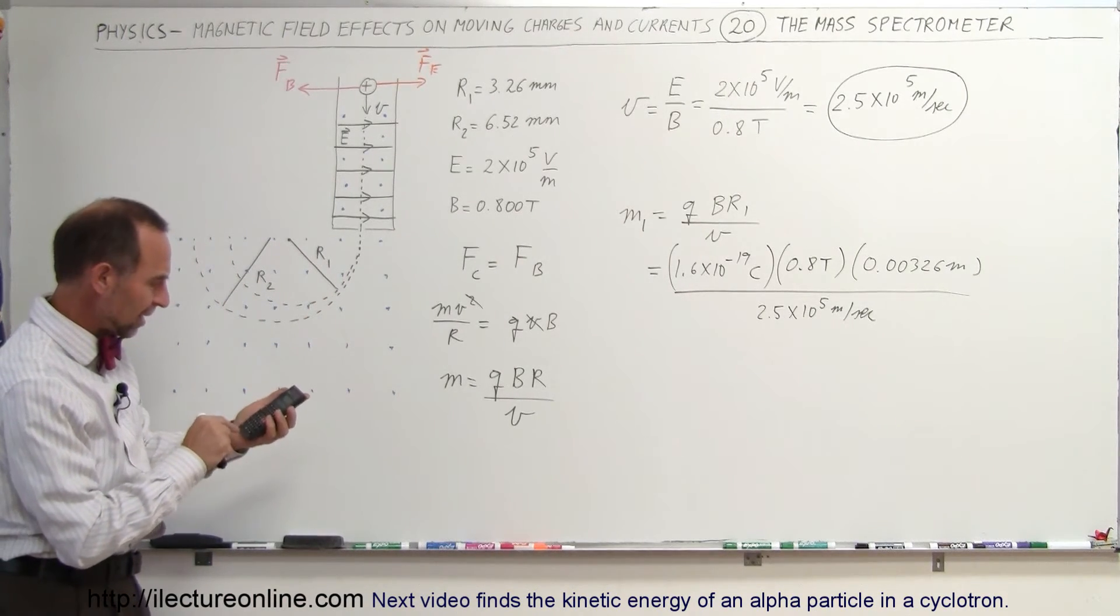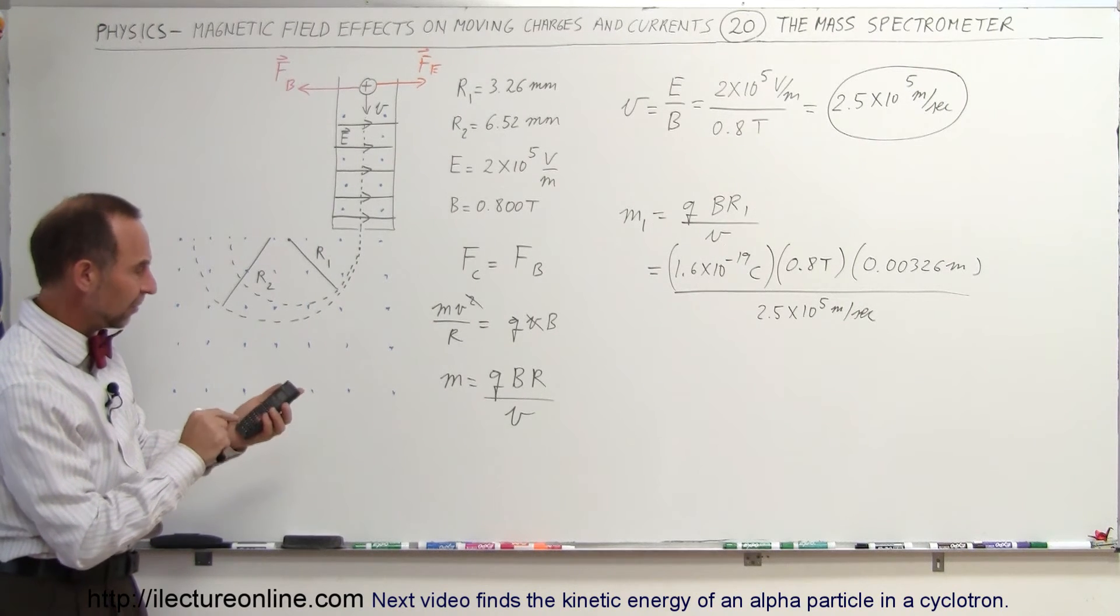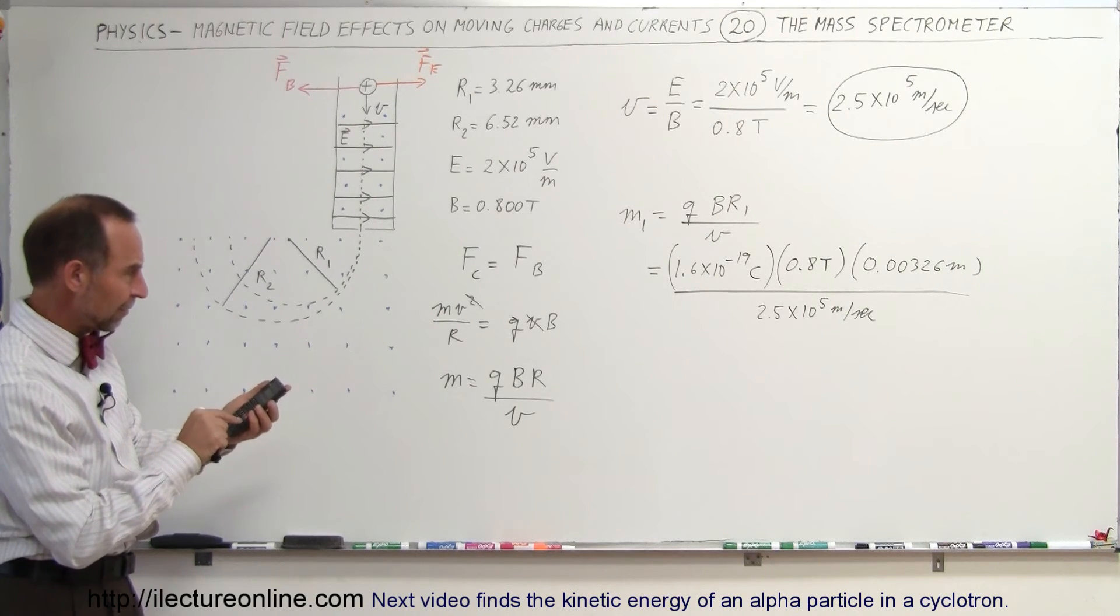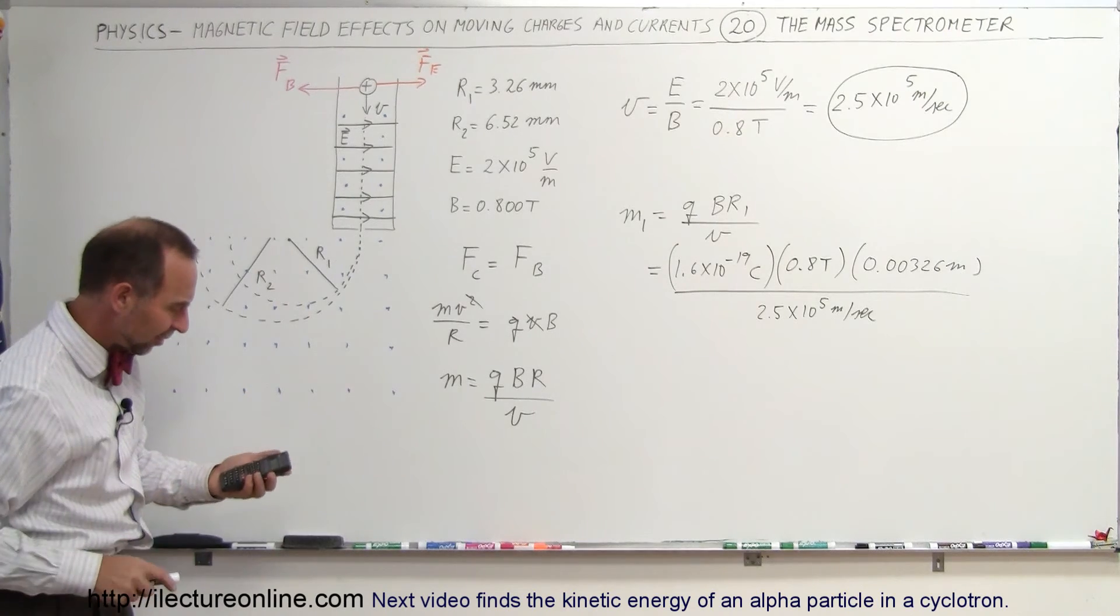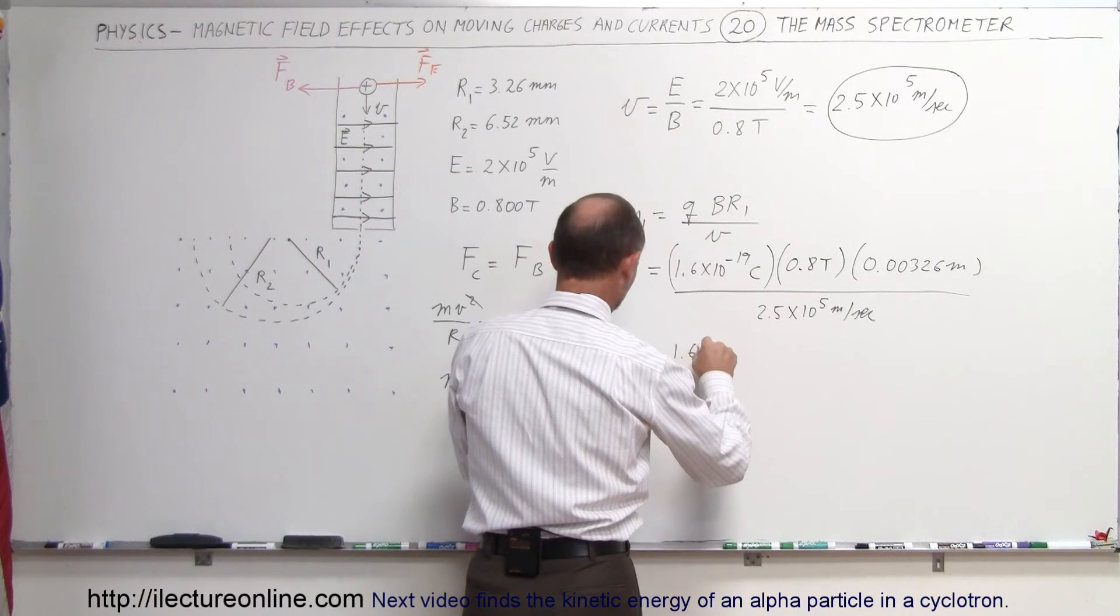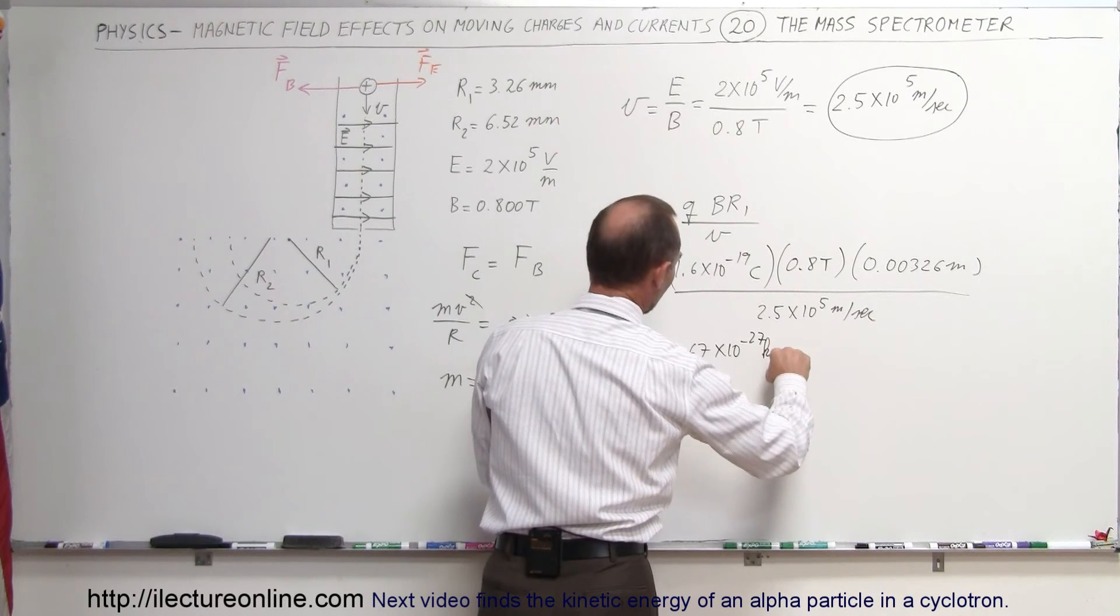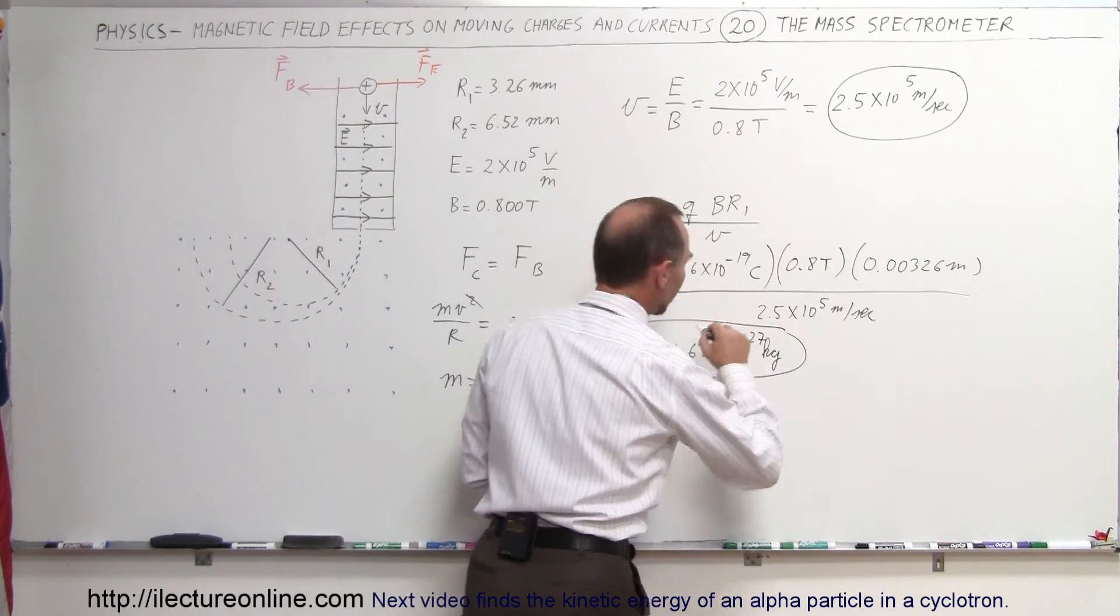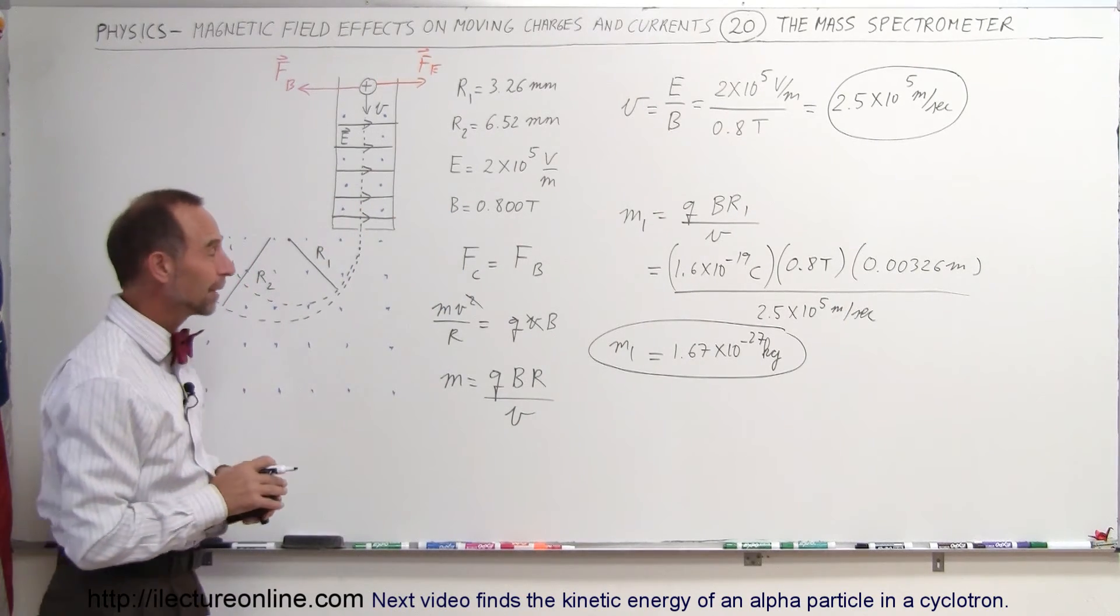So 1.6 e to the minus 19 times 0.8 times 0.00326 divided by 2.5 e to the fifth equals. And look at that. We have something equal to 1.67 times 10 to the minus 27 kilograms. And those who might know a little bit about small particles, that looks like the mass of a proton.